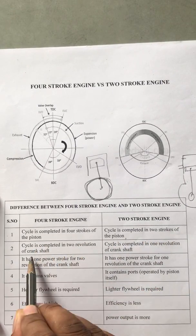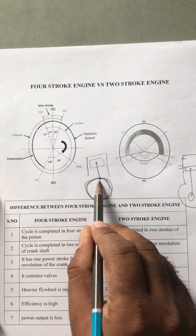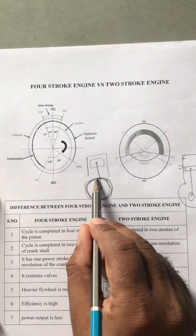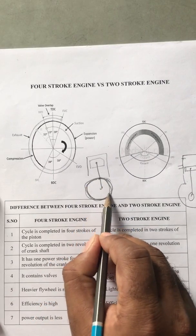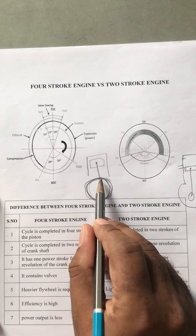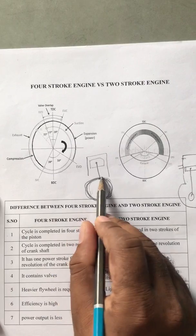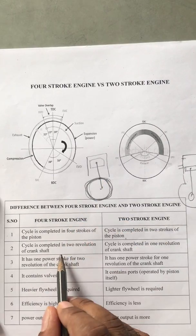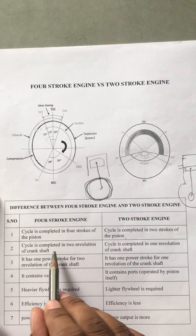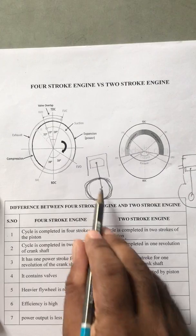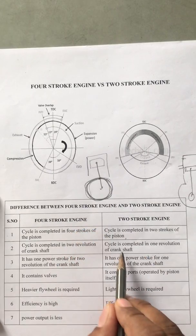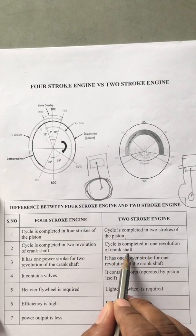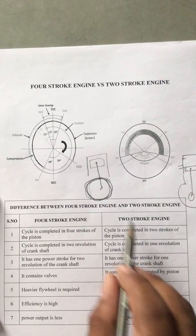In the 4-stroke engine, the cycle is completed in 2 revolutions of the crankshaft. Suction, compression, expansion, exhaust — that is 2 revolutions, and 2 revolutions of the crankshaft is one cycle. In the 2-stroke engine, the cycle is completed in 1 revolution of the crankshaft.